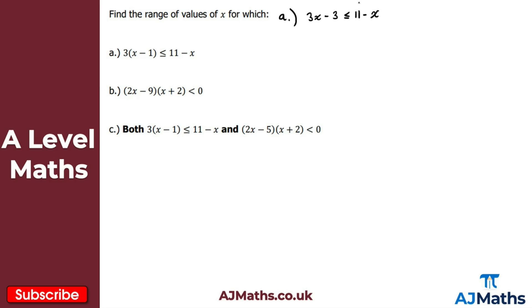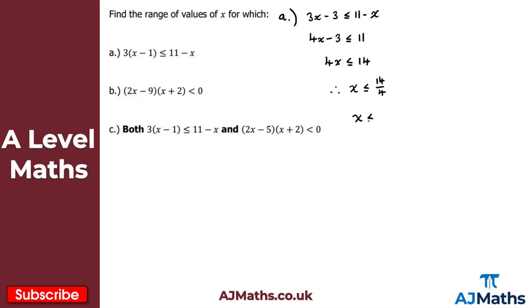To isolate x, I add x to both sides: 4x - 3 ≤ 11. Then I add 3 to both sides: 4x ≤ 14. Dividing both sides by 4 gives x ≤ 14/4, which simplifies to x ≤ 7/2. That's the solution to part a.